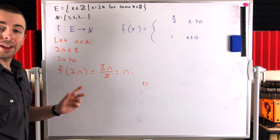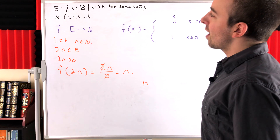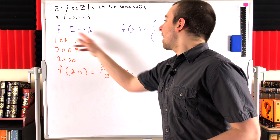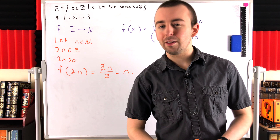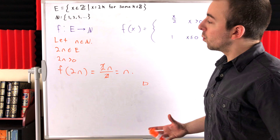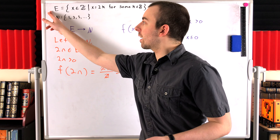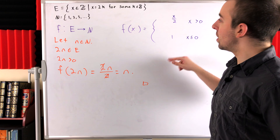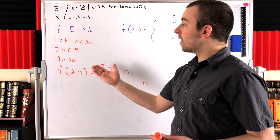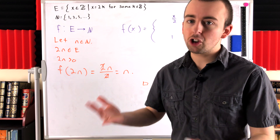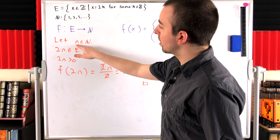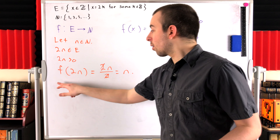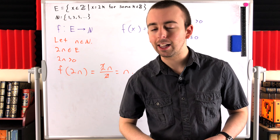Thus there exists a surjection from the set of even numbers to the set of natural numbers, and here f is just such a function. To reiterate: to show there is a surjection from the evens to the naturals, we came up with a function we thought was a surjection, and then proved it — meaning we showed that given any natural number, we can find an element in our domain that our function will map to that codomain element.